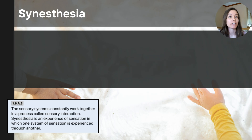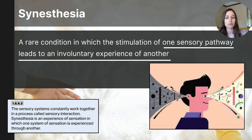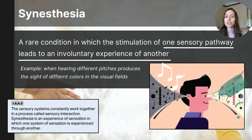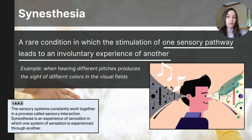Synesthesia is a fascinating condition where sensations interact with one another. It occurs when an individual has one sensation stimulated and it leads to the involuntary experience of another — a cross-wiring in neural connections that creates a unique experience. Common forms include seeing letters or numbers causing the perception of a color, particular sounds evoking visual colors, or words and sounds triggering specific tastes. These sensory experiences are vivid and consistent over time, suggesting a neurological basis for this connectivity. It's estimated that about 4% of the population experiences some form of synesthesia, and many people might have mild forms without even realizing it.